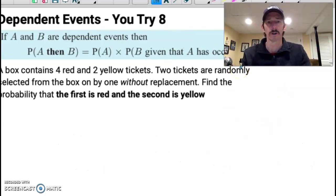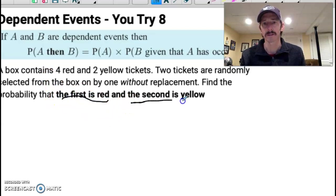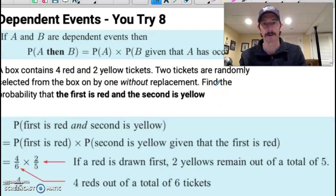Now you're going to give this thing a go. You're going to do the same thing, same scenario, but you're going to find the probability that the first one is red and the second one is yellow. So red, keep it. You're not putting it back. Put it in your pocket. And the next one's yellow. So pause this thing. Give it a look.